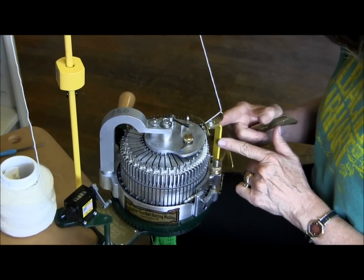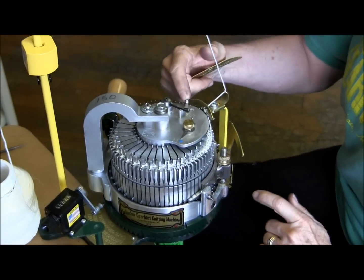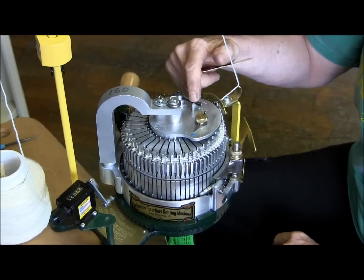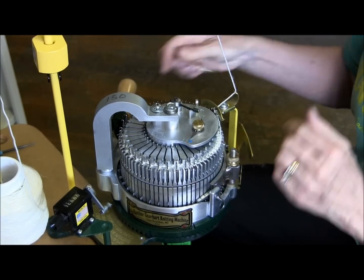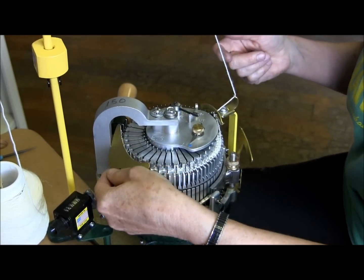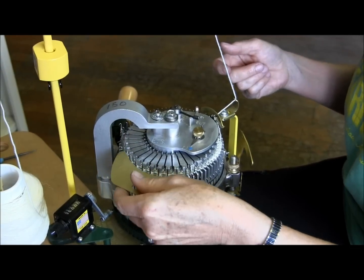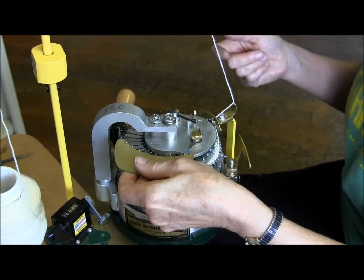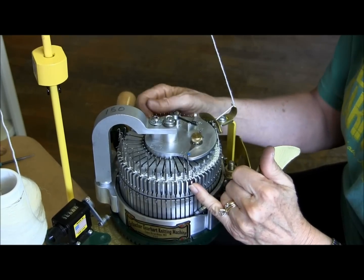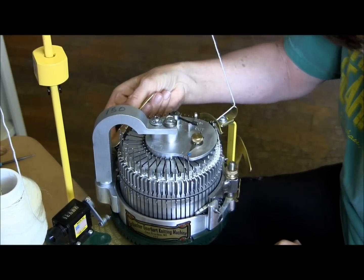I stop with the yarn carrier in the front. I have switched the tappet plate to the out position so the ribber needles aren't going to be working, and I raise all the back half of the needles. So from hash mark to hash mark, every needle of the cylinder gets raised.